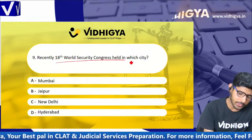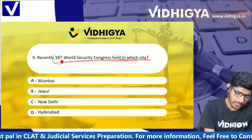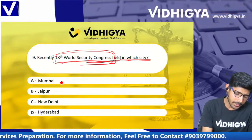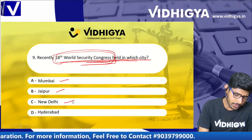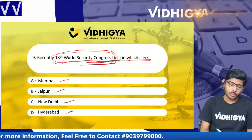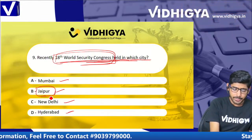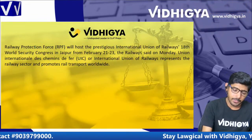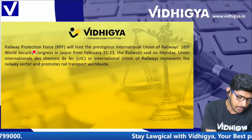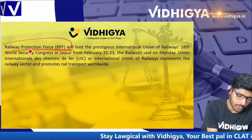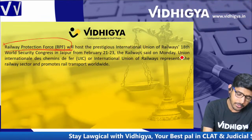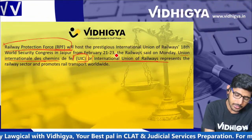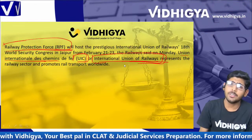Recently, the 18th World Security Congress was held in which city? Options are: Mumbai, Jaipur, New Delhi, and Hyderabad. The correct answer is Jaipur. The 18th World Security Congress was recently held in Jaipur, hosted by the Railway Protection Force. Additionally, UIC (Union International des Chemins de fer) and the International Union of Railways jointly conducted this congress.